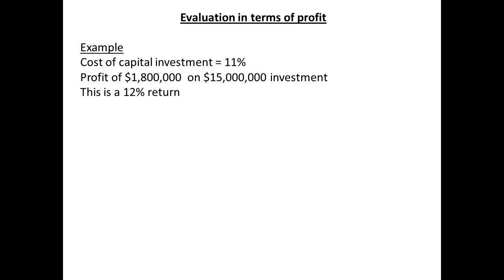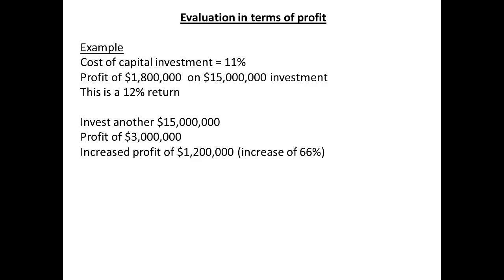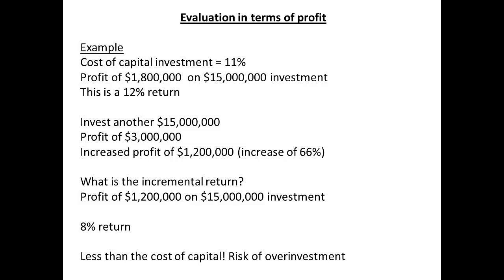Evaluation on the basis of profit can also lead to misleading information. Let us say that the cost of capital investment is 11% and a plant has a profit of $1.8 million from an investment of $15 million — this is a 12% return. If another $15 million is invested, the profits are increased to $3 million. Looked at on the basis of profit, the manager boasts an increase of 66% profit. However, looking at the position from the viewpoint of incremental analysis, this gives a profit of $1.2 million for an investment of $15 million — a return on investment of only 8%. This is less than the cost of capital, so it is actually decreasing shareholder value. Evaluation on the basis of profit alone will possibly lead to overinvestment.